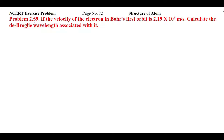This is NCERT exercise problem 2.59 from page number 72 of Structure of Atom. The problem states: if the velocity of the electron in Bohr's first orbit is 2.19 × 10⁶ meter per second, calculate the de Broglie wavelength associated with it. So the given velocity of the electron in Bohr's first orbit is 2.19 × 10⁶ m/s and we have to find the de Broglie wavelength.